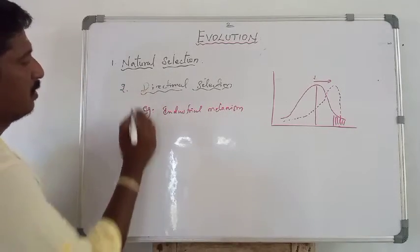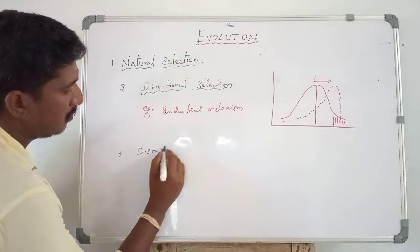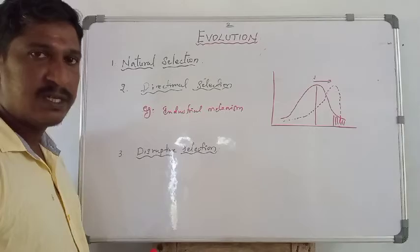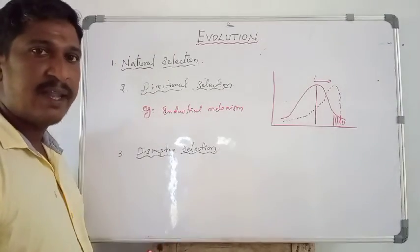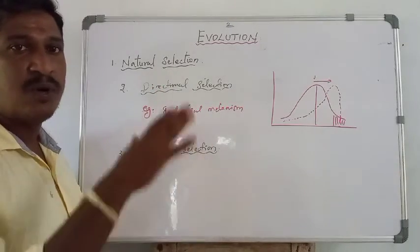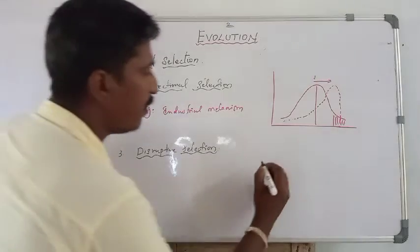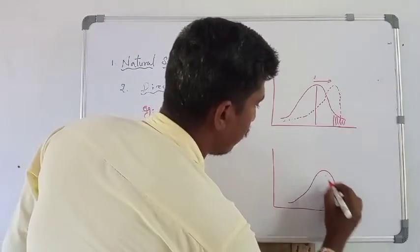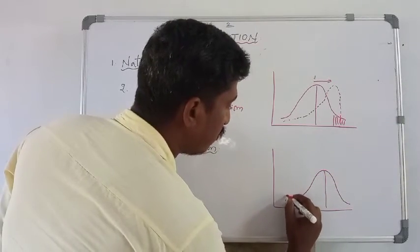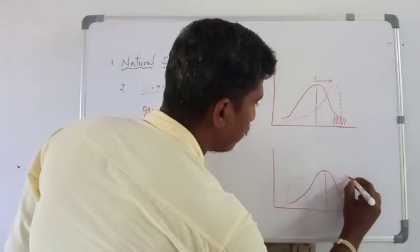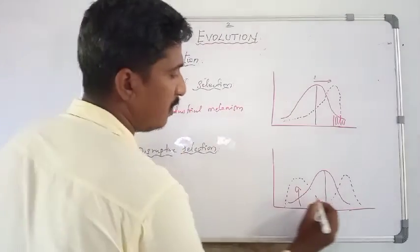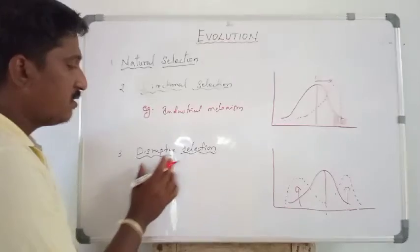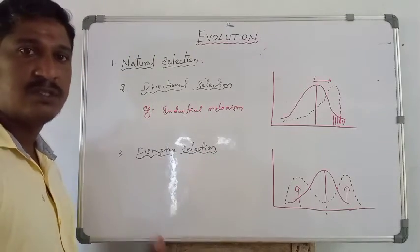The third type is disruptive selection. In disruptive selection, the population selects both peripheral characters, which increase, while only the mean value decreases. Both extreme characters increase in the population. This is a normal population graph where the extreme characters are increased and the mean characters are decreased. So it is called disruptive selection — a population splits into two or more subspecies.